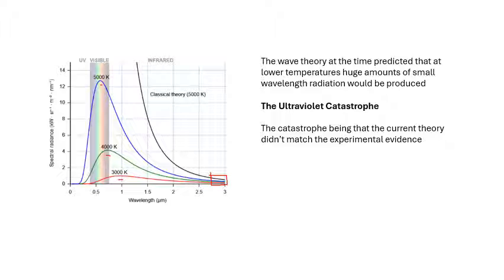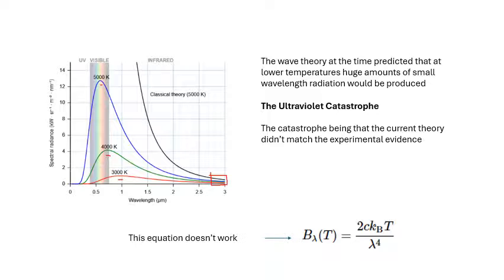And that was the ultraviolet catastrophe. The catastrophe was that their theory didn't work. The wave theory didn't agree with the experimental evidence, and that is the ultraviolet catastrophe, the nightmare, the ultraviolet nightmare. Basically that equation there doesn't work - that was the current wave theory there and that didn't work. And you don't need to know that equation.